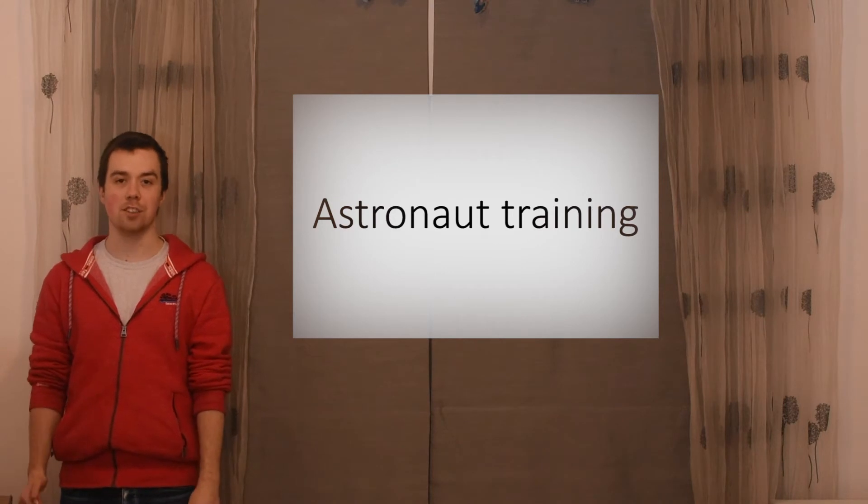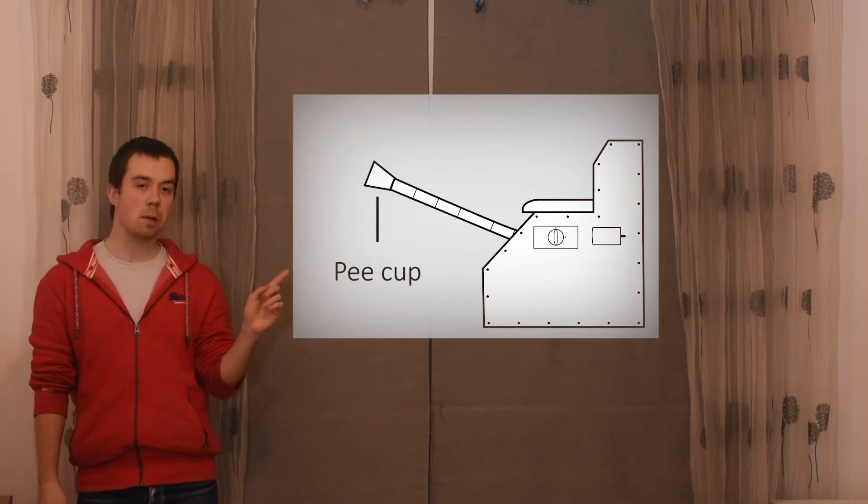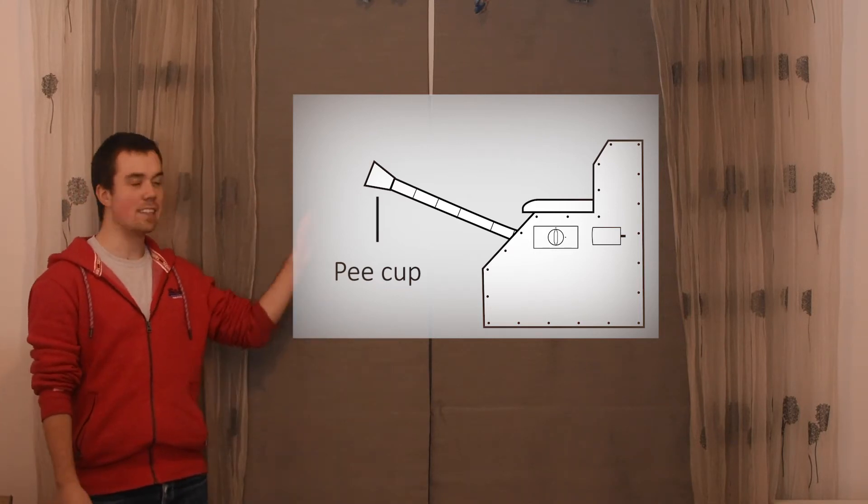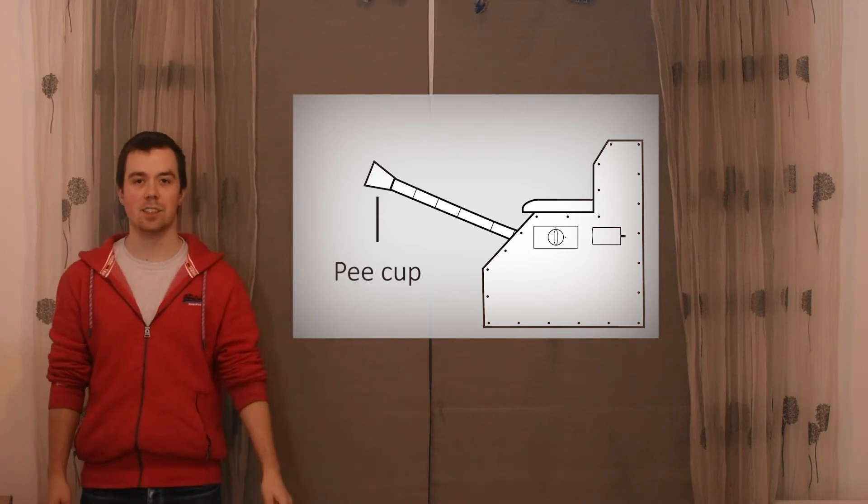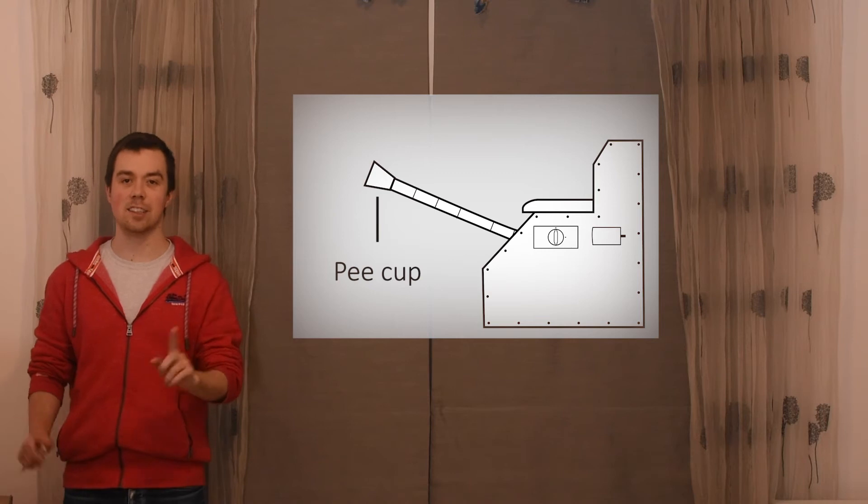But don't worry, we have a solution for that. Basically, we've come up with a device that is pretty much a vacuum cleaner that you're going to pee into. You just turn it on and then you pee in this end, and it's going to suck in all the pee. So we don't worry about it floating everywhere, and it makes sure you don't get covered in it, and neither does the space station.